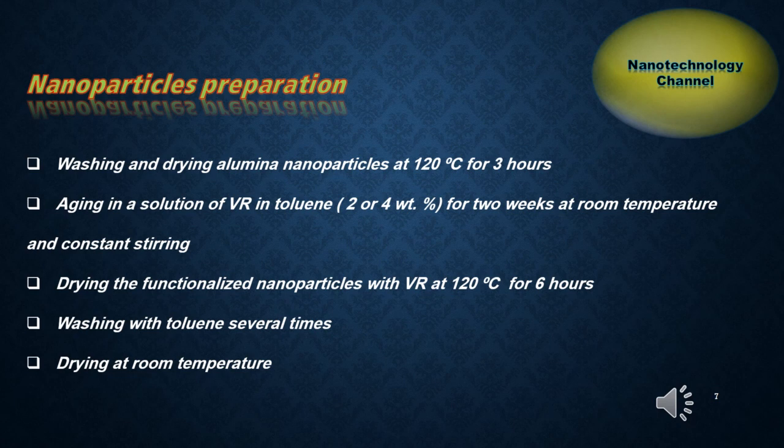Then dry the functionalized nanoparticles with VR at 120 degrees Celsius for six hours to eliminate any remaining solvent and allowing the dissolved VR to transport throughout the alumina surface. The next step is washing with toluene several times and finally drying at room temperature.